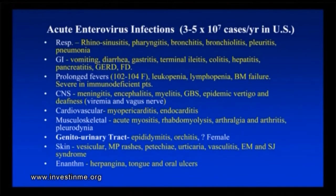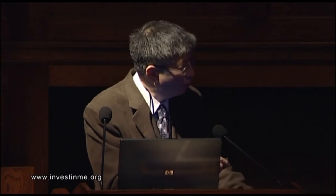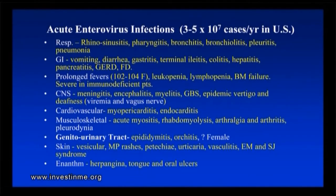These patients can have prolonged fevers for three weeks — as high as 102 to 104 degrees — accompanied by very little other symptoms. Some people will have severe myalgias, very mild respiratory or gastrointestinal symptoms. A number of patients develop leukopenia and lymphopenia — very profound leukopenia and lymphopenia. Bone marrow failure has been reported, especially in neonates, and it's much more severe in immunodeficient patients. We've seen transplant patients die from this virus infection. These viruses can disseminate into the central nervous system — to the meninges, brain, and spinal cord. It can cause Guillain-Barré syndrome. We saw five cases of Guillain-Barré in the hospital in the last two weeks after a respiratory infection. It can cause epidemic vertigos and deafness. The viruses can get to the CNS through the blood, but they can also travel up the vagus nerve from the stomach into the brain stem.